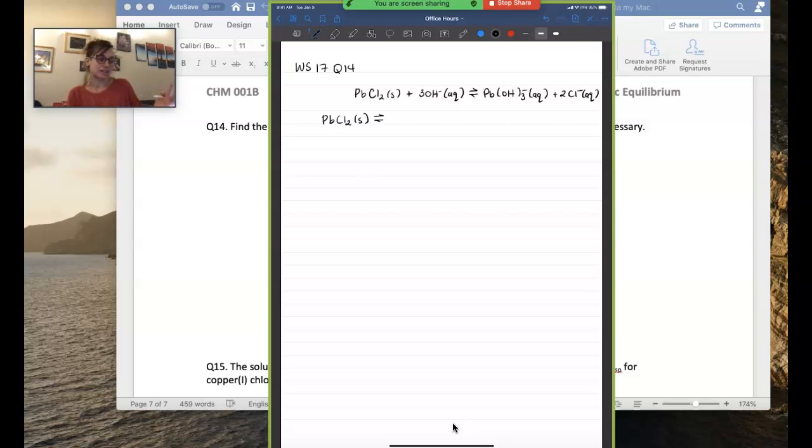Lead(II) chloride is not very soluble in water but if it did dissociate to a small extent it would dissociate into lead 2+ cations plus chloride anions. But don't forget to balance that equation. We'll need two of those. And if you look this value up in the back of your textbook you would get 1.17 times 10 to the negative fifth.